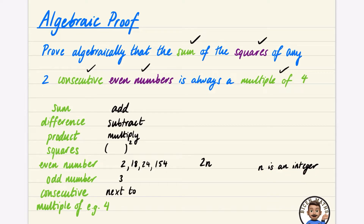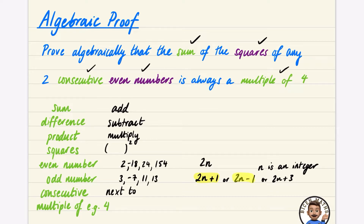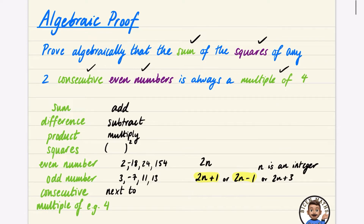Odd numbers are obtained by taking an even number and adding or subtracting one. For example, 54 plus 1 is 55, and 54 minus 1 is 53 — both odd. So odd numbers can be written as 2n plus 1 or 2n minus 1. You could also have 2n plus 3 or 2n minus 3, but the most common forms are 2n plus 1 or 2n minus 1.